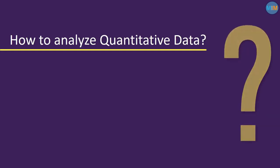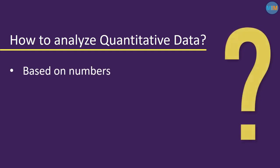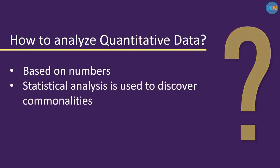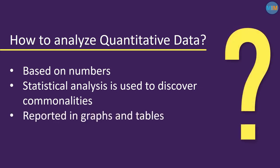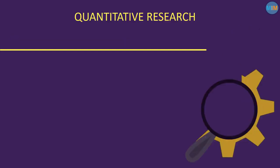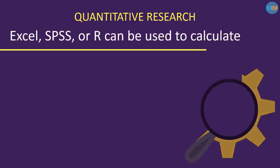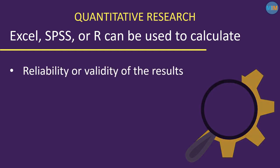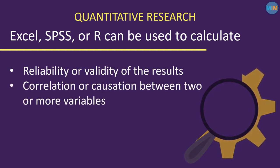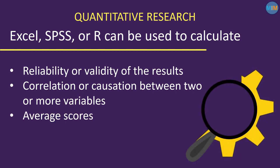How to analyze quantitative data? Quantitative data is based on numbers. Simple math or more advanced statistical analysis is used to discover commonalities or patterns in the data. The results are often reported in graphs and tables. Applications such as Excel, SPSS, or R can be used to calculate things like the reliability and validity of the results, the correlation or causation between two or more variables, and average scores.